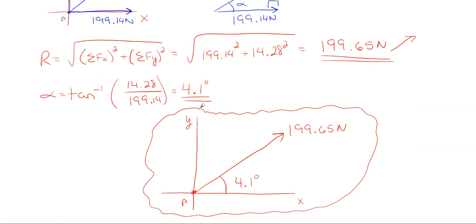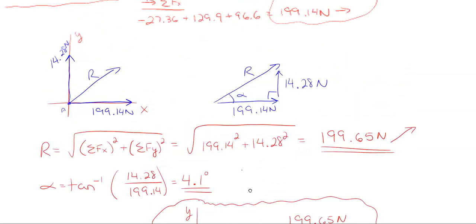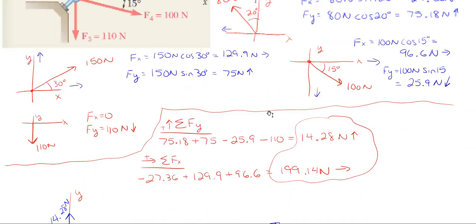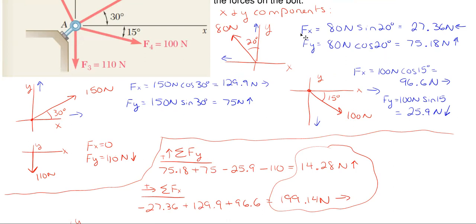As you get better at these problems, you don't need to write out each component separately. You can jump straight to your ΣFy and ΣFx equations — for instance, writing 80 cos(20°) instead of 75.18. But if you're just starting out, it's better to do it the drawn-out way shown here until you become familiar with it.